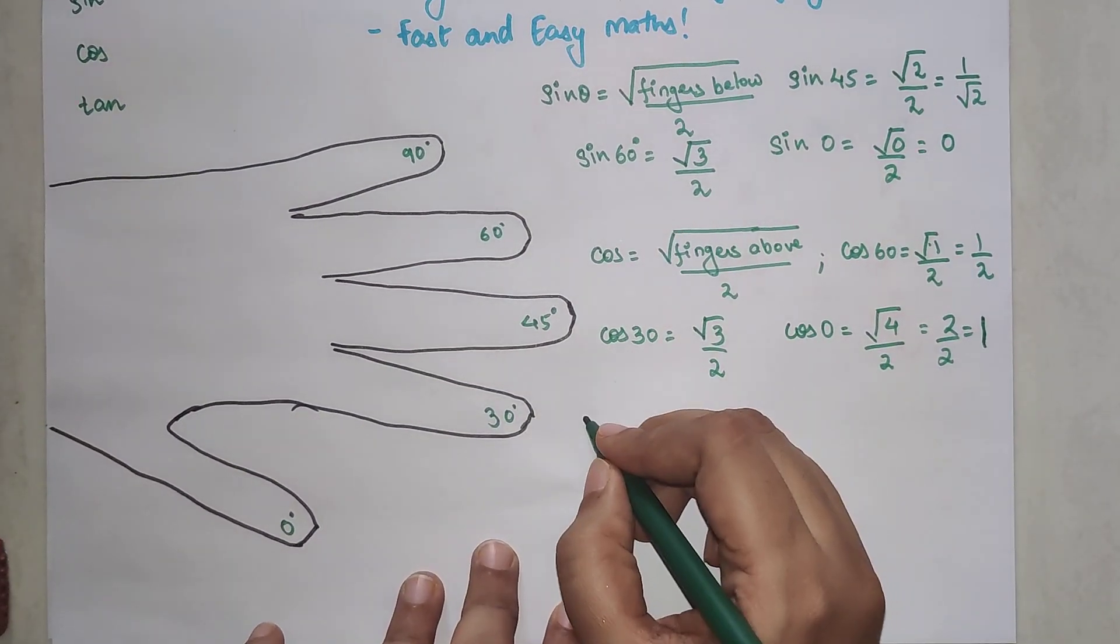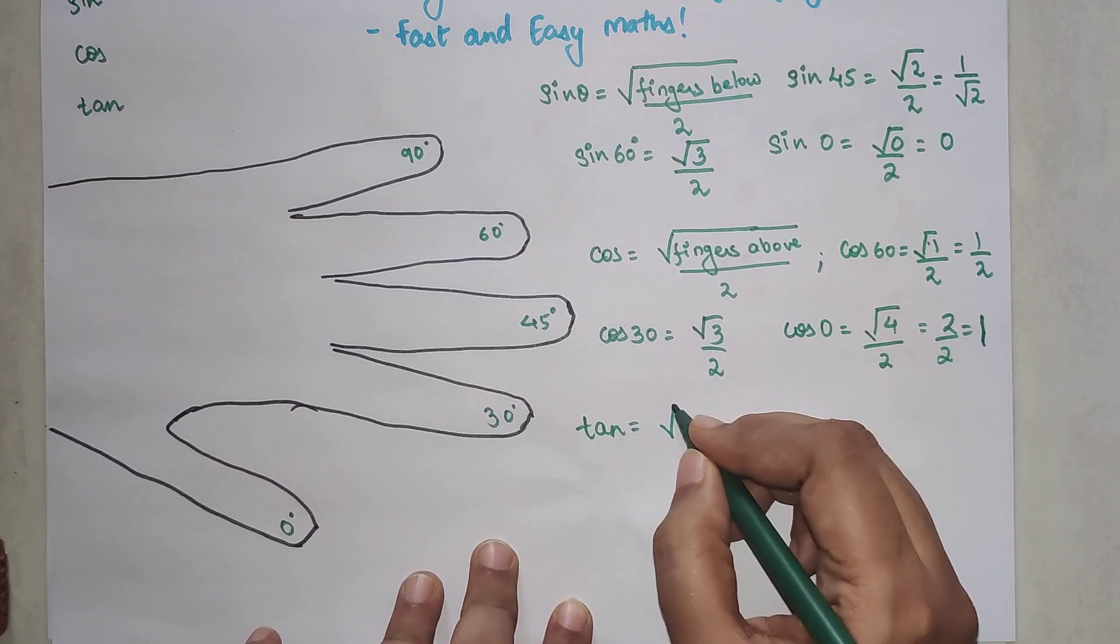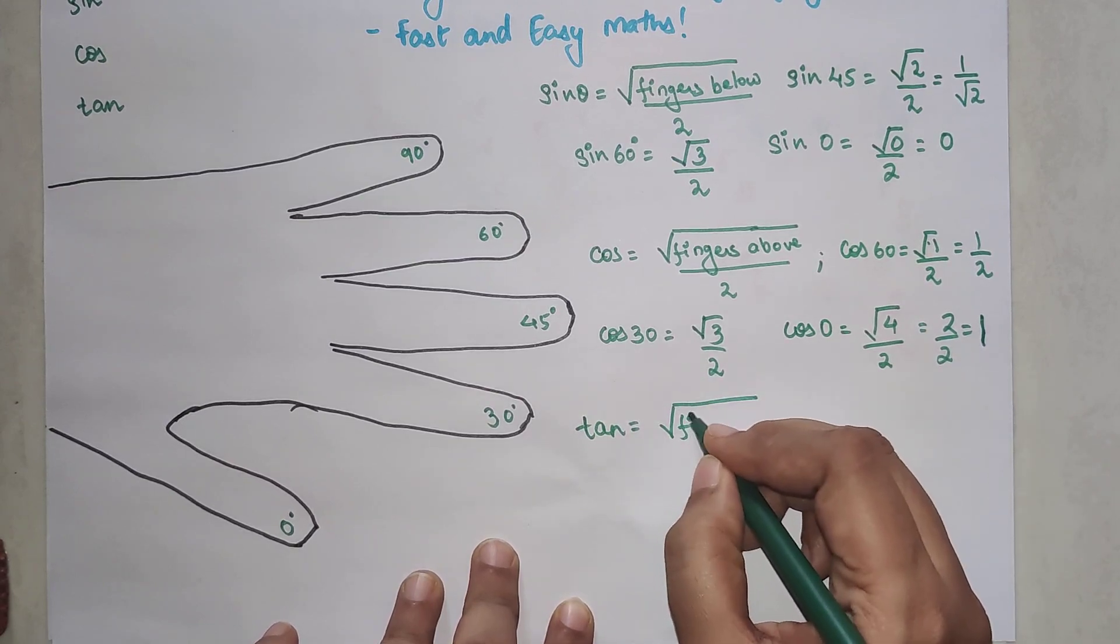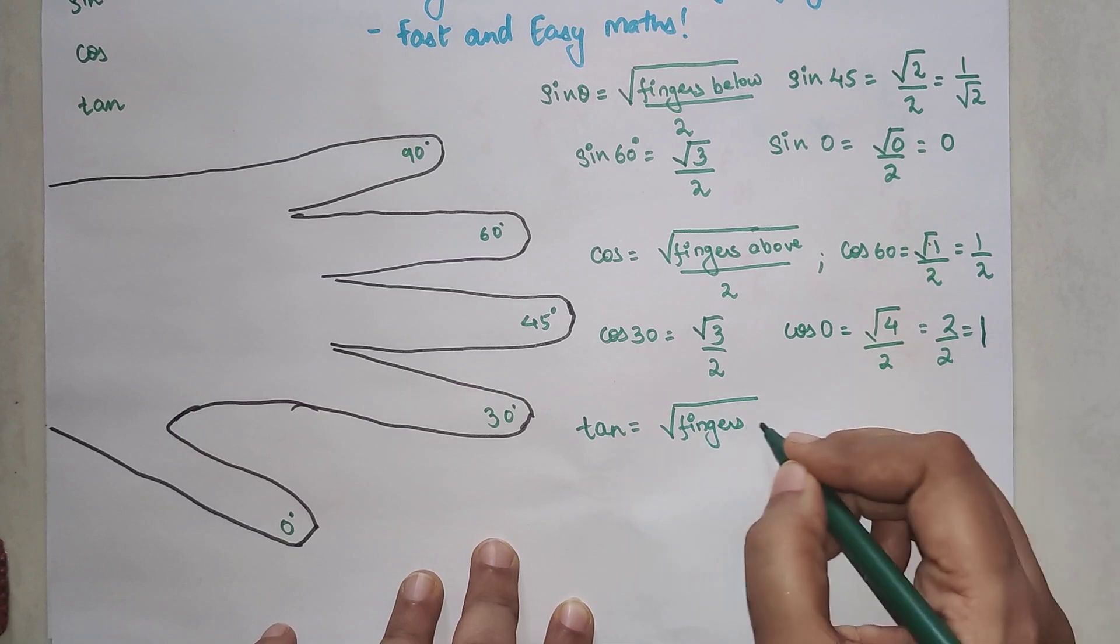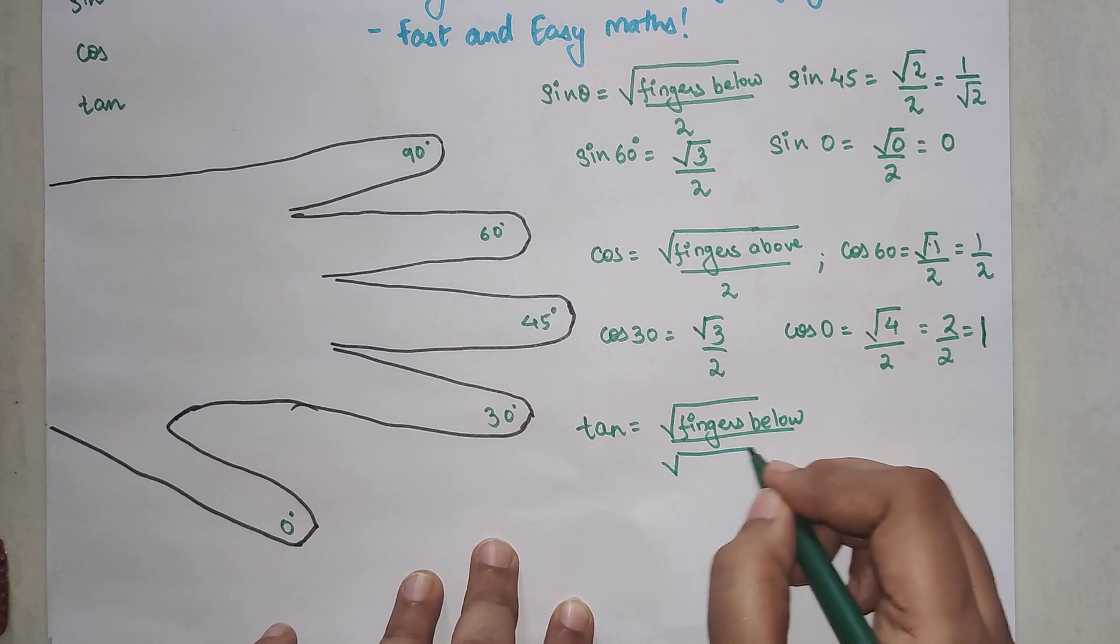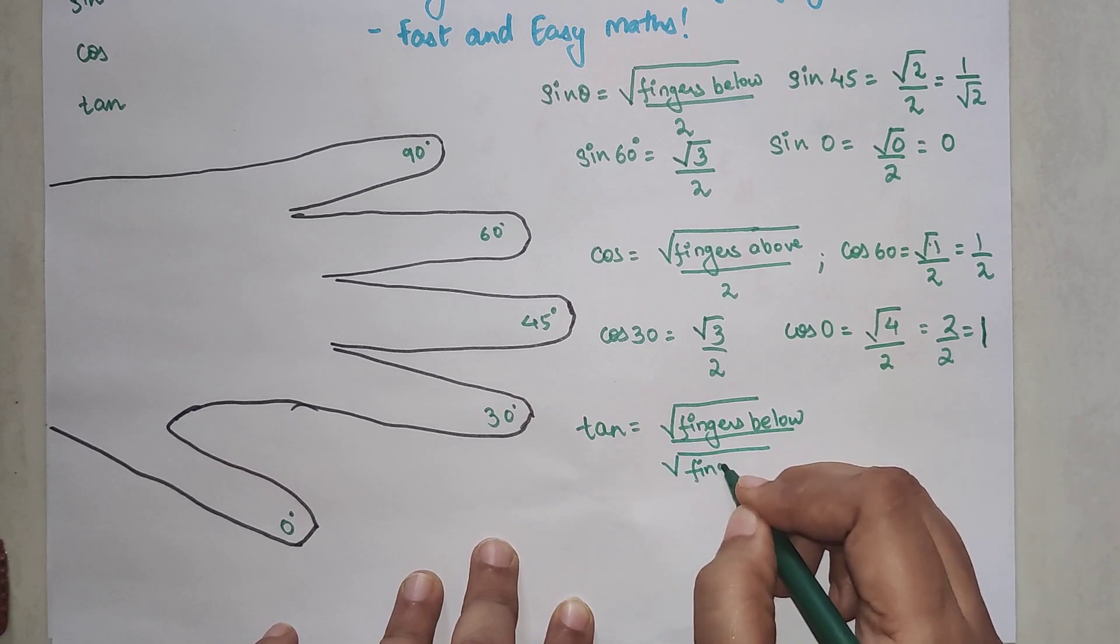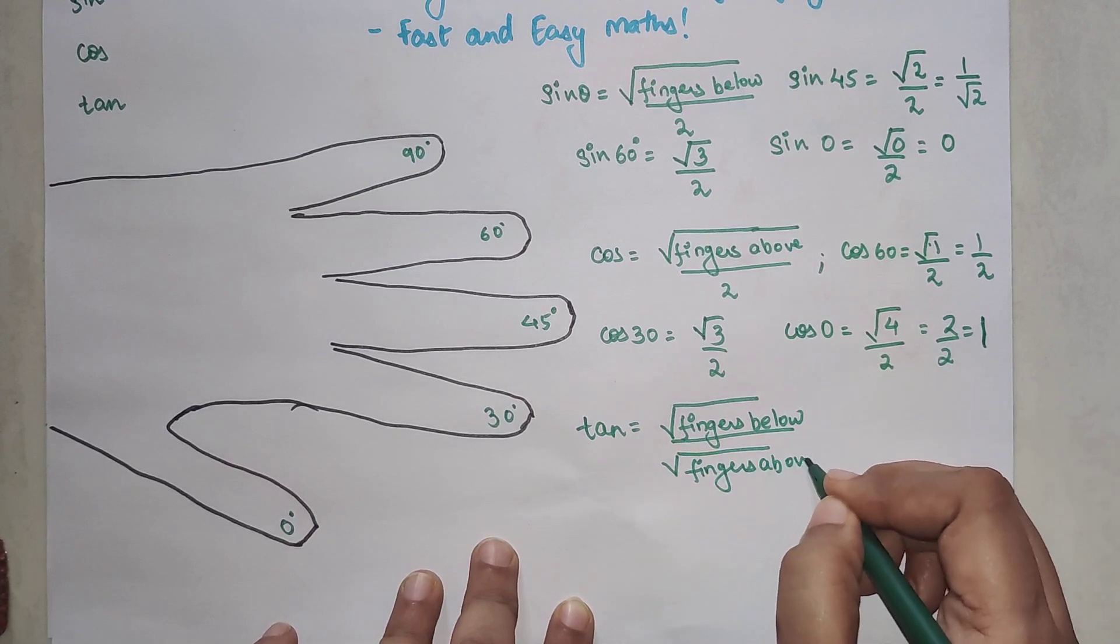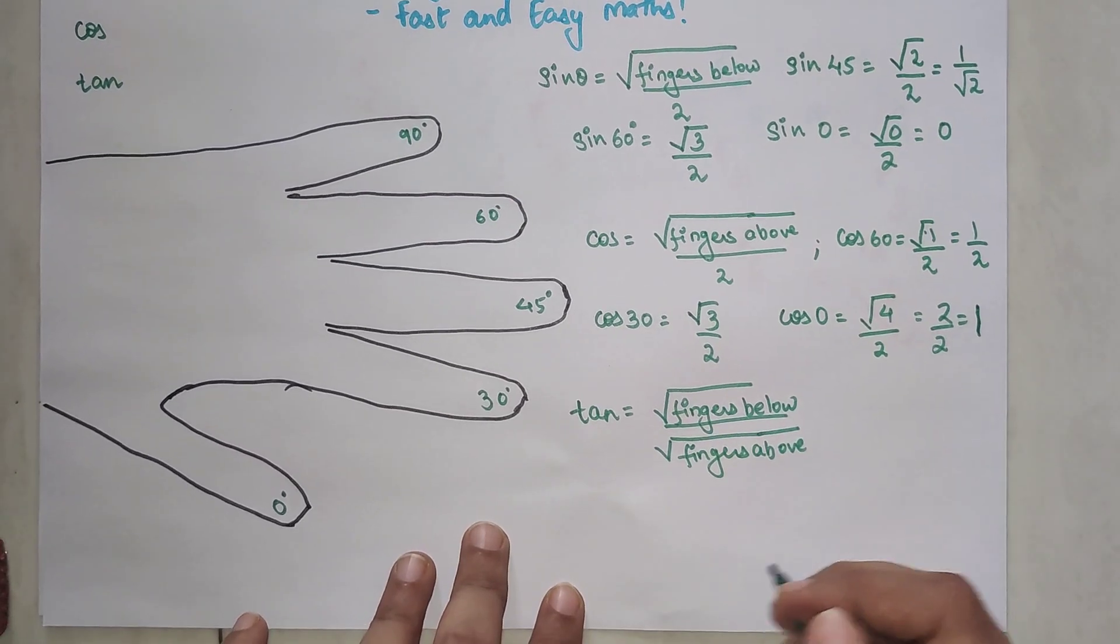So now for tan what is your formula? Tan formula is nothing but root of fingers below upon root of fingers above.